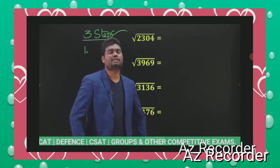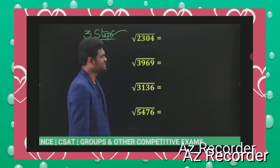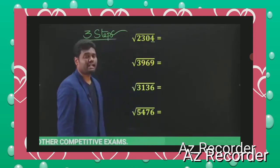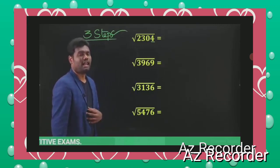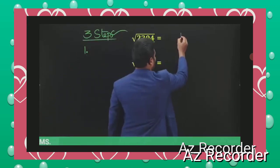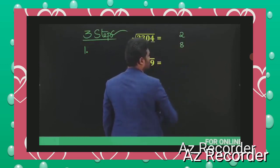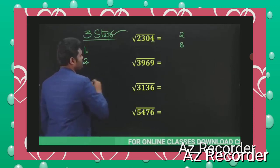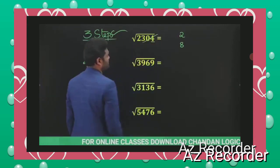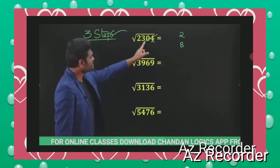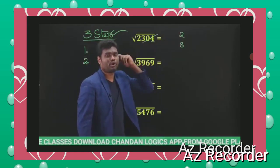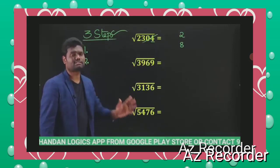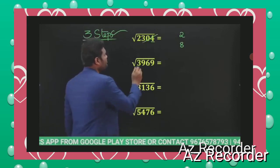The first step is to check the last digit possibility. Now look here — the last digit is 4. Where do we get last digit 4? As we just discussed, last digit 4 means you are going to get 2 or 8. So note down these possibilities, then strike off those numbers — just strike off the other options.